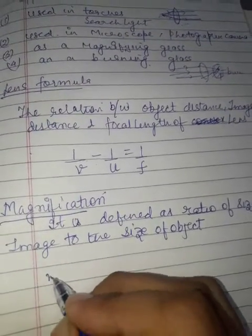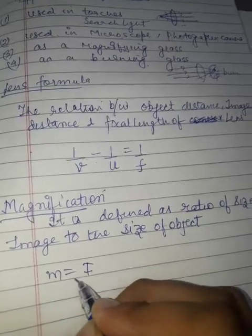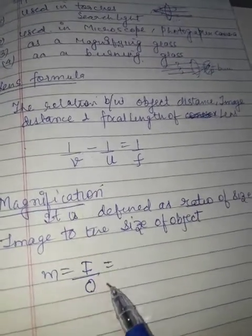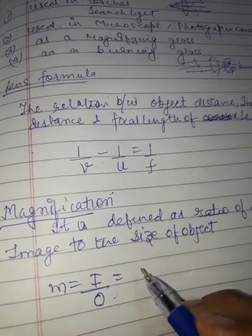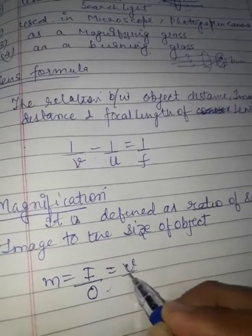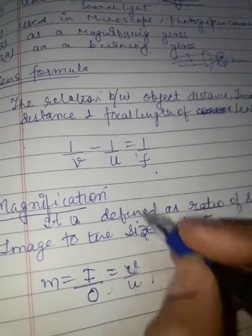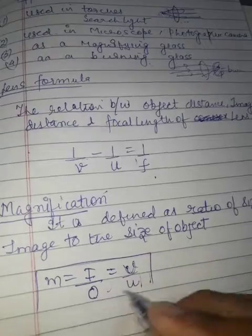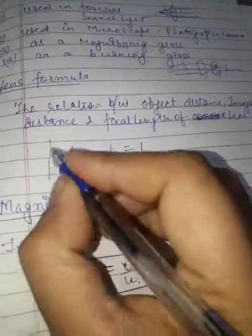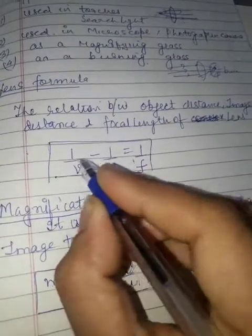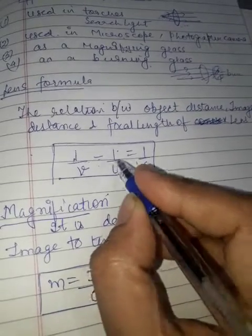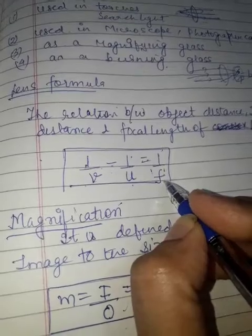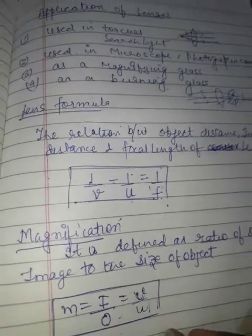Magnification m equals the size of image (I) divided by size of object (O). In the mirror formula it was −v/u, and here for a lens it will be +v/u. The derivation is not in our syllabus — we will do it in Class 12. The lens formula is: 1/v − 1/u = 1/f, where f is the focal length of the lens. Now let's move to sign conventions.